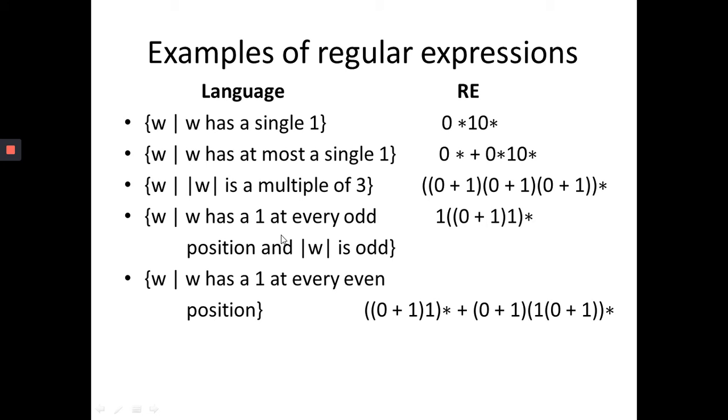Then, W has a 1 at every odd position and length of W is odd. Here, odd position is 1, 3, and 5. You can start first 1, then (0 or 1)1 bracket closure. It will give you length of W is odd.